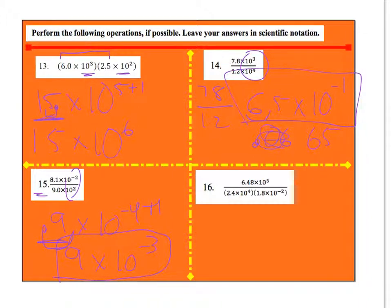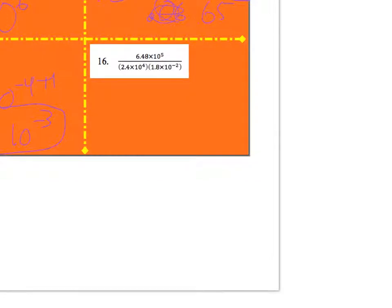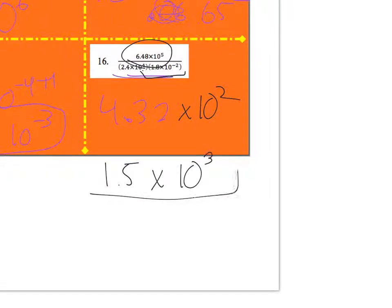Here, a little bit of mixing and matching. We're going to multiply this first. So 2.4 times 1.8 is going to give you 4.32, and then when I add the exponents that's going to be times 10 to the second. So then I'm going to divide this. So 6.48 divided by 4.32 is going to be 1.5, then subtract the exponents, and after all that I get 1.5 times 10 to the third.